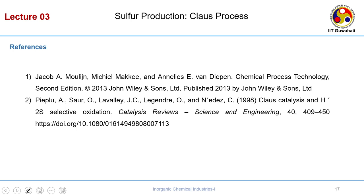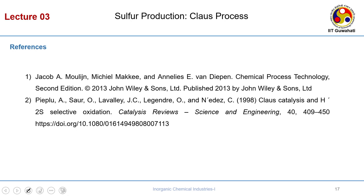We conclude this lecture. The flow sheets are adapted from the book of Moline. Students should also visit the referenced article on Claus catalysis and H2S selective oxidation, which discusses the mechanism of how the catalyst works at high temperature, including which active sites are involved. Those interested in the reaction engineering part can look at the second article. We have finished the topic of elemental sulphur, covering the Claus process, super-Claus process, SCOT process, and sulphuric acid formation.